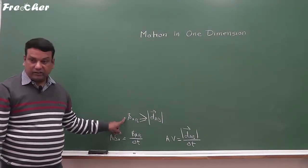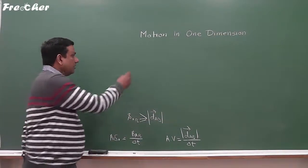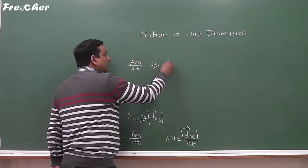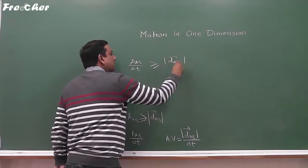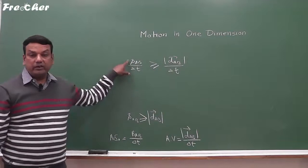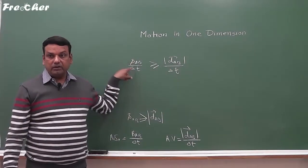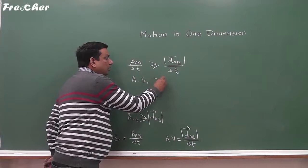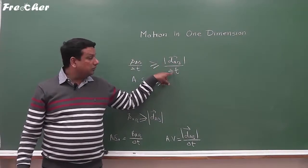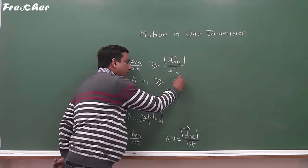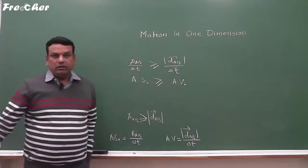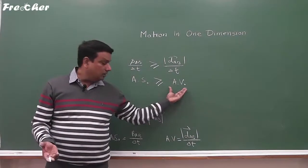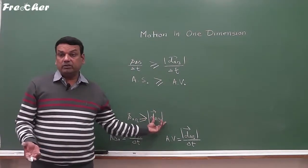If in the distance-displacement relation we divide both sides by delta t, then S_AB upon delta t is greater than or equal to the magnitude of displacement AB upon delta t. S_AB upon delta t is the average speed of the particle, and the rate of change of displacement is the average velocity of the particle in magnitude. Therefore, average speed is also related to average velocity in the same way as distance is to displacement.